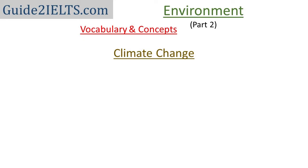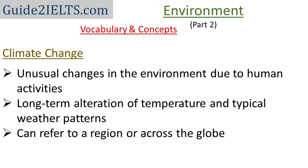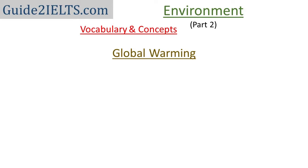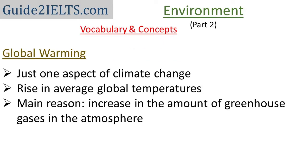Now we talk about a term that is quite the buzzword these days — climate change. As the word suggests, it is about change in the climate. But when we use the term climate change, we are specifically referring to unusual changes in the climate due to human activities. Climate change is the long-term alteration of temperature and typical weather patterns in a place. We often hear climate change and global warming used interchangeably, but global warming is just one aspect of climate change — it refers specifically to the rise in average global temperatures.